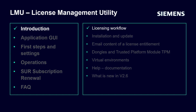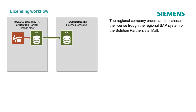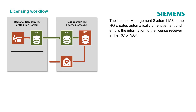Let's start with the licensing workflow, from the order to the activation of a license. This is an overview of the licensing workflow from order to activation at a customer site, on a product or engineering machine for an individual engineering tool. The regional company orders and purchases the license through the regional SAP system, or solution partners via iMall. The License Management System (LMS) in the headquarter automatically creates an entitlement and emails the information to the license receiver in the regional company or solution partner.